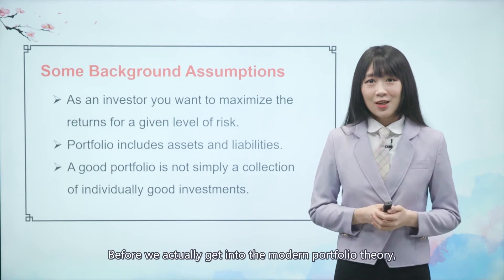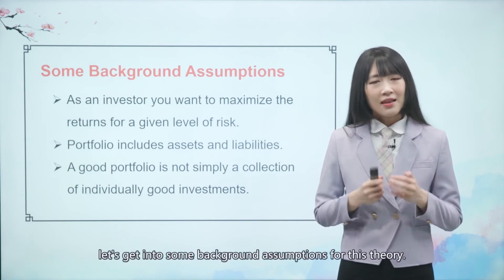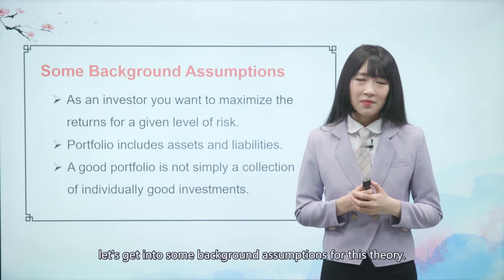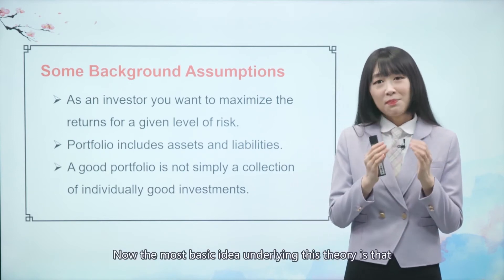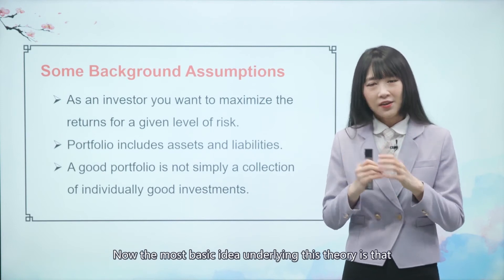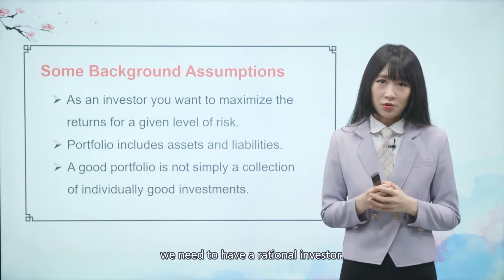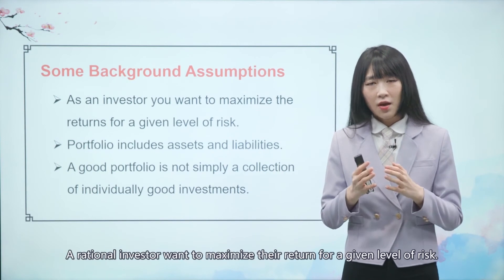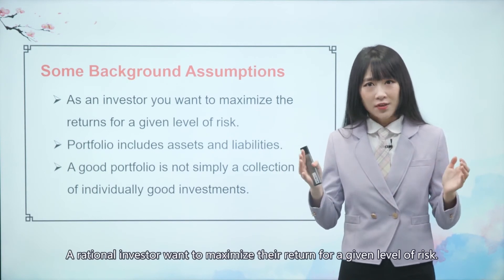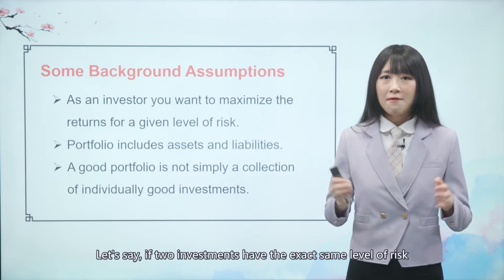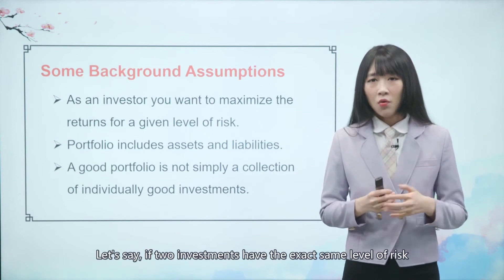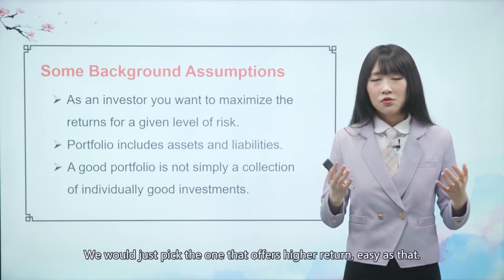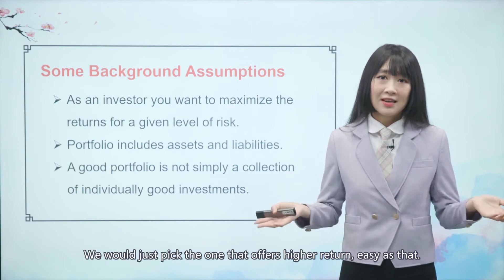Before we get into the Modern Portfolio Theory, let's go through some background assumptions. The most basic idea is that we need a rational investor. A rational investor wants to maximize their return for a given level of risk. If two investments have the exact same level of risk but different return levels, we would just pick the one that offers the higher return. Easy as that.